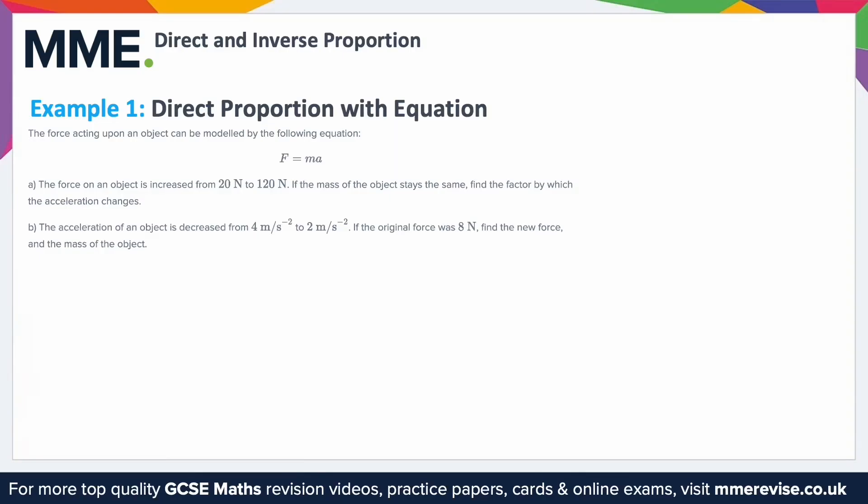Example 1: direct proportion with equation. The force acting upon an object can be modelled by the following equation F equals MA. The force on an object is increased from 20 newtons to 120 newtons. The mass of the object stays the same. Find the factor by which the acceleration changes.